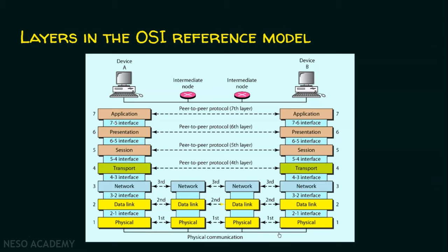Whatever data is received, it will be given from the physical layer up through data link layer, network layer, transport layer, session layer, presentation layer, and application layer. The data generated by the source computer flows from layer 7 to layer 1. Upon reception, the data is processed from layer 1 to layer 7.